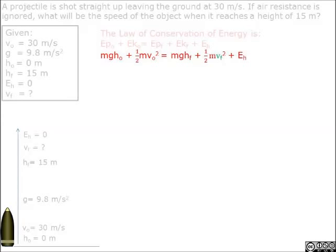Which also means mass times gravity times the initial height plus half times mass times initial velocity squared will equal mass times gravity times final height plus half times mass times final velocity squared plus heat energy.